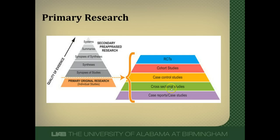Above that are cross-sectional studies, a good example of which are surveys where you get information at one slice in point in time. It's really difficult to make any causal associations because you really don't know with something like a survey if the exposures really did precede a cause of something. It's hard to control for bias or confounding, which is why that is down there.